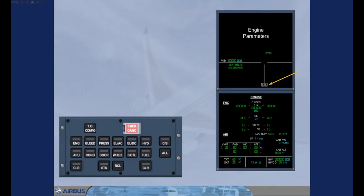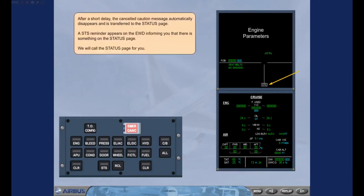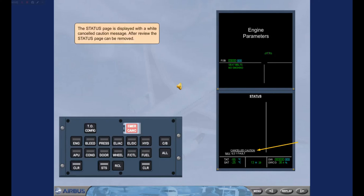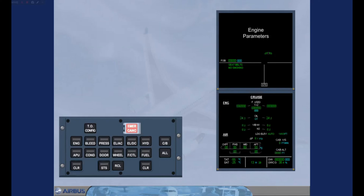We will call the status page for you. The status page is displayed with a white cancelled caution message. After review, the status page can be removed. The cruise page returns on the lower E-CAM display and there is a status reminder on the engine warning display. For the rest of the flight, you will not be alerted each time the E-CAM system detects a fault with ILS1.